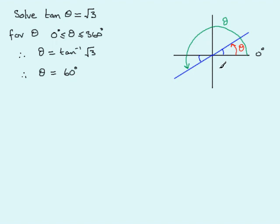Notice that 60° is an acute angle — between 0° and 90° — so it's in the first quadrant, relating to the red angle. Since the red angle is exactly the same as the blue reference line, we mark this in as 60°.